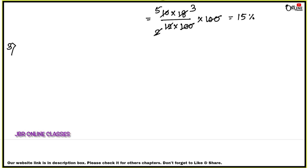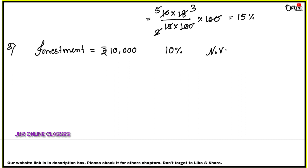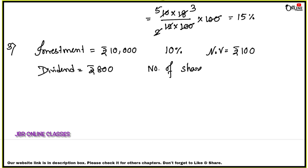Number three: Rohit Kulkarni invests rupees 10,000 — total investment equals rupees 10,000 — in 10% rupees 100 shares, so rate of dividend is 10% and nominal value equals rupees 100. His annual dividend is rupees 800, so dividend equals rupees 800. Let number of shares equal to x.